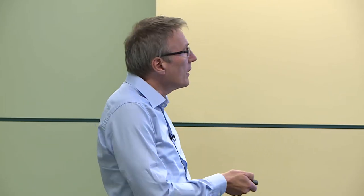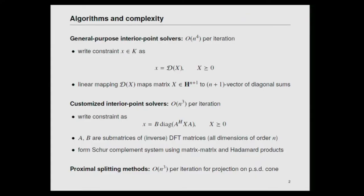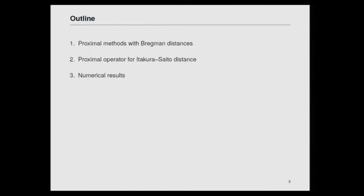There is another possibility that is very interesting in the proximal literature. If we had a non-Euclidean Bregman projection on these constraints, there might be a possibility to scale better than O(n³). The purpose of this talk is to examine whether we can project on the cone of non-negative polynomials in less than n cubed operations per iteration by using a non-Euclidean Bregman distance instead of the squared Euclidean distance. I will start with background on Bregman distances and generalized proximal methods, then look at the specific Bregman distance we will use, and then present numerical results.